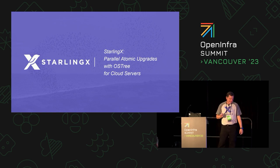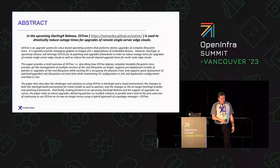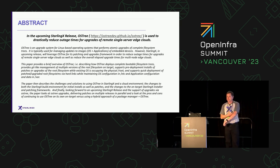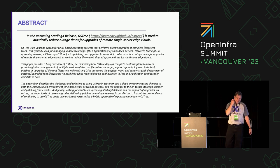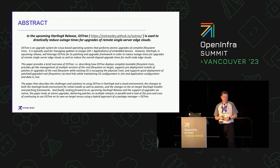My name is Greg Waynes, and this talk is basically to share StarlingX team's experiences in evaluating using OSTree to do parallel atomic software upgrades on our StarlingX cloud servers. OSTree is basically an upgrade system for Linux-based operating systems or Linux-based deployments. It's typically been more used in embedded operating systems. But in STX8 of StarlingX, we introduced OSTree and we're using it for patches in STX8, and now we're starting to evaluate it for full software release upgrades of StarlingX.